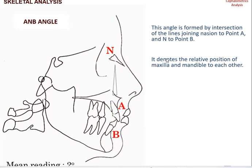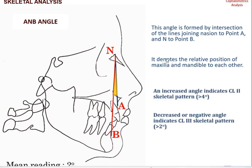The third angle is the ANB angle, formed by the intersection of lines joining nasion to point A and nasion to point B. Point A is the reference point on the maxilla and point B on the mandible, so this angle represents the relative position of the maxilla and mandible to each other. An increased ANB angle of more than 4 degrees indicates a Class II skeletal pattern, whereas a decreased or negative angle indicates a Class III skeletal pattern, wherein the mandible is placed in a relatively forward position compared to the maxilla.